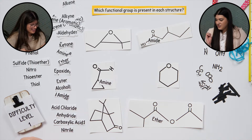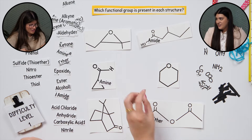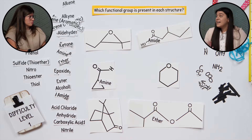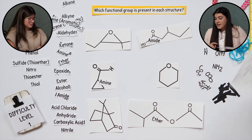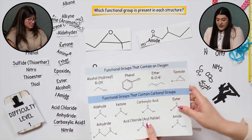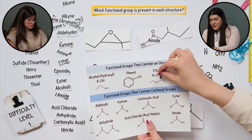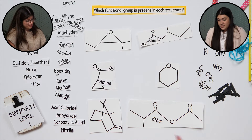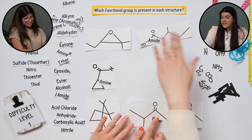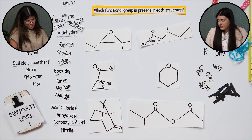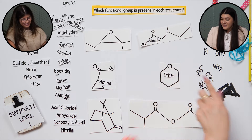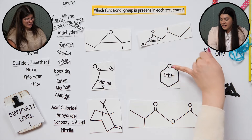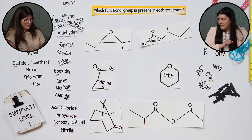Next is the ether — that's an oxygen right in the center between two carbon chains, kind of interrupting a carbon chain. Does it have to mirror on both sides? It could be different — it's still an ether. So this one would be an ether, because that oxygen is connected to two carbon chains — it's interrupting that carbon chain.